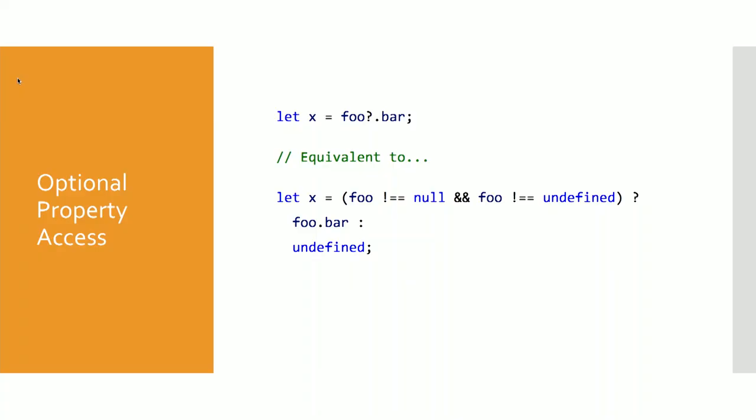In optional chaining, if you have some big configuration object that may or may not have certain properties, if you use dot to access them, you get the annoying situation where if something's missing it throws an exception, because undefined dot is just a type error. So instead, you can use question mark dot, which only gets the property if you don't have null or undefined.